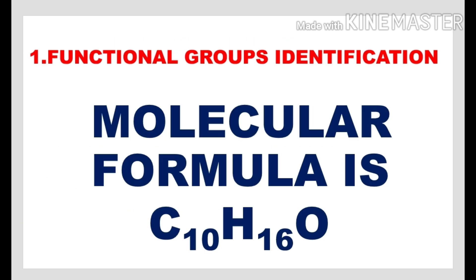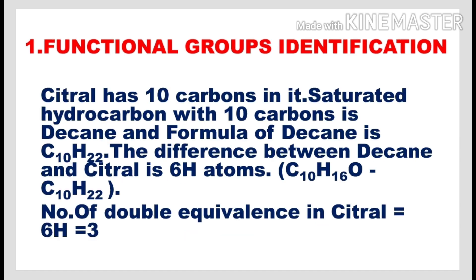The molecular formula of citrol is C10H16O. Citrol has 10 carbons in it. The saturated hydrocarbon with 10 carbons is decane, and the formula of decane is C10H22. The difference between decane and citrol is 6 hydrogen atoms. So the number of double bond equivalents in citrol is 3.